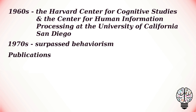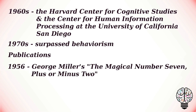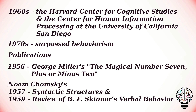By the early 1970s, this movement had surpassed behaviorism. Some of the important publications that induced this revolution include George Miller's article 'The Magic Number Seven Plus or Minus Two,' published in 1956, which was one of the most frequently cited papers in psychology.